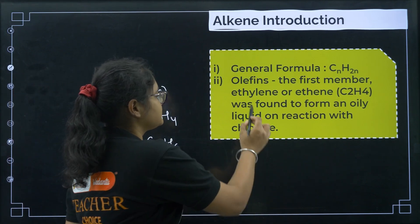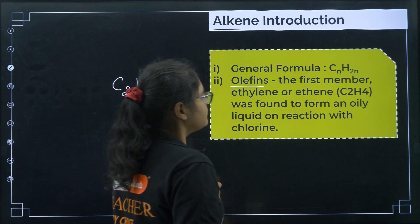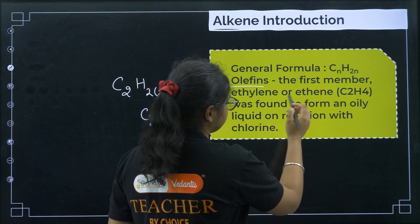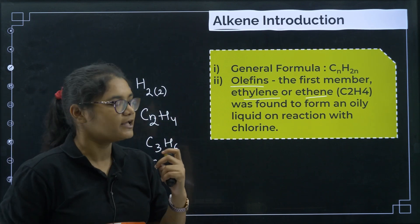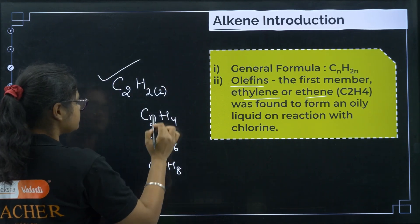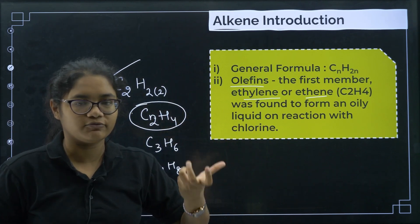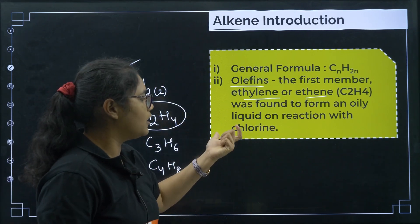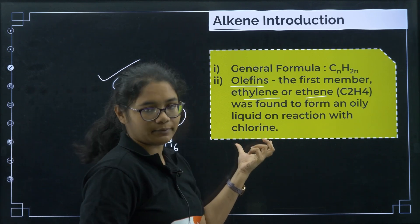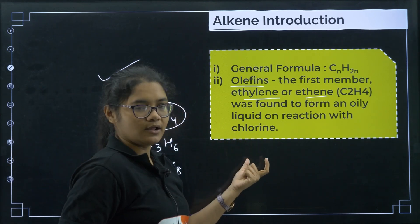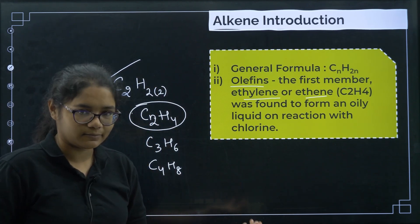Alkenes are also called olefins. The first member, ethene (C2H4), when reacted with chlorine, forms an oily liquid — that is why they are called olefins, like 'oil.'